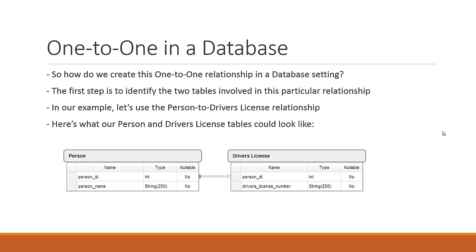So how do we create this one-to-one relationship in a database? Like with the one-to-many relationship, we have a specific way to set it up through the database schema. The first step is to identify the two tables involved. Using the person-to-driver's-license example, the person table has a person ID and a person name, and the driver's license table has a person ID and a driver's license number.